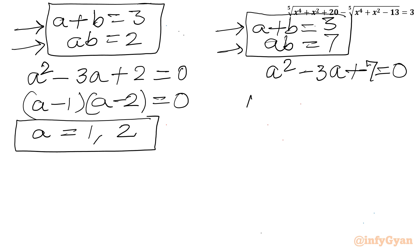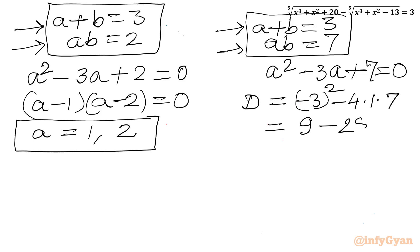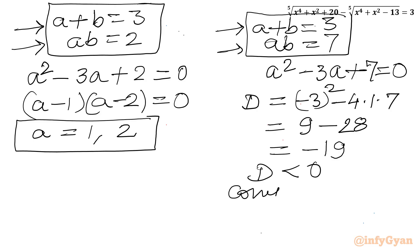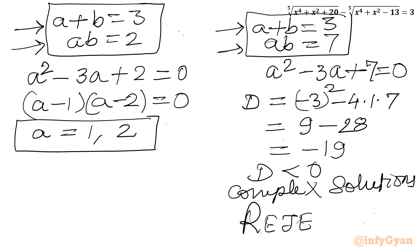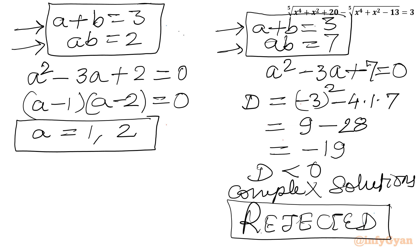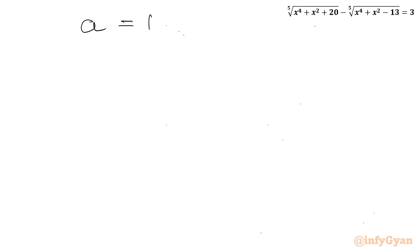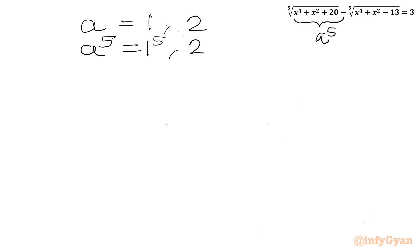So a = 1 and a = 2 are the accepted values. Recalling our substitution, a⁵ equals the first radicand. So a⁵ = 1⁵ = 1 and 2⁵ = 32. Replacing a⁵ with x⁴ + x² + 20: we get x⁴ + x² + 20 = 1 and x⁴ + x² + 20 = 32.